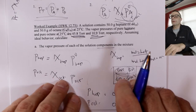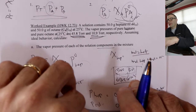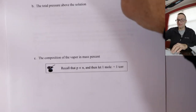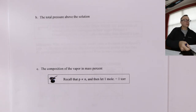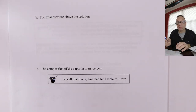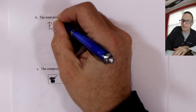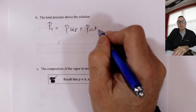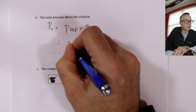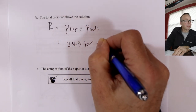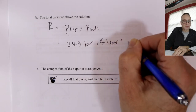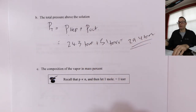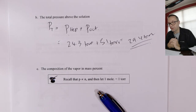Next question: what is the total pressure? Using Dalton's Law, that's just the partial pressures added together. We just got those from the previous question. So total pressure = 24.3 torr + 5.1 torr = 29.4 torr. The total pressure above that mixture is 29.4 torr.